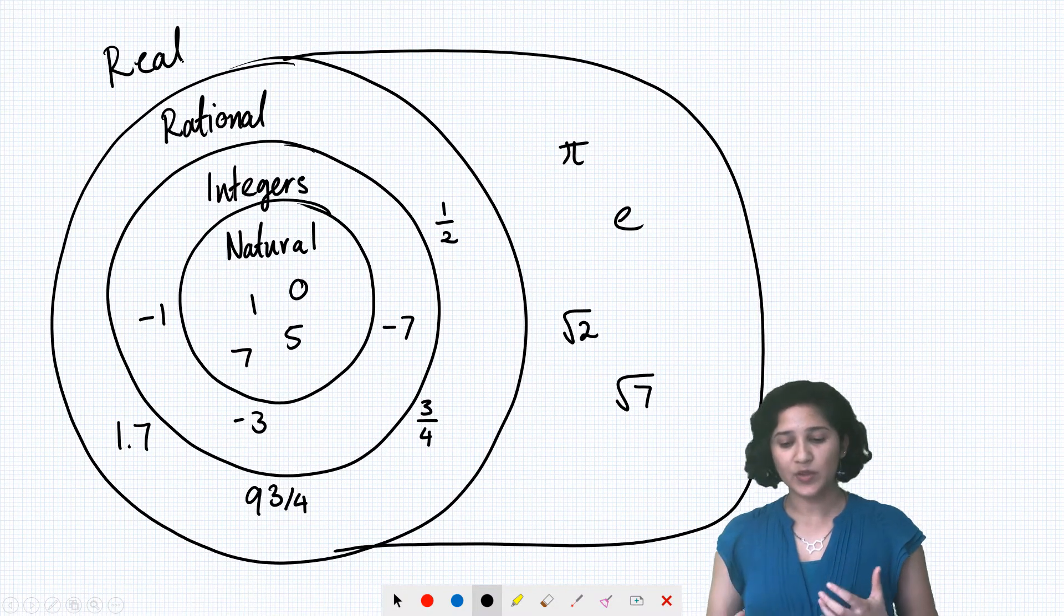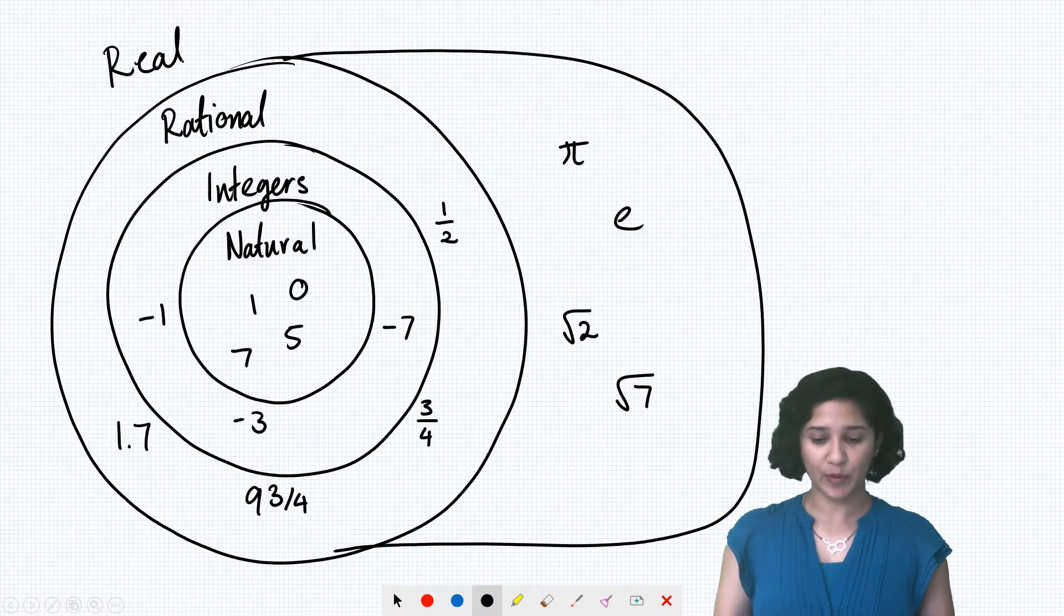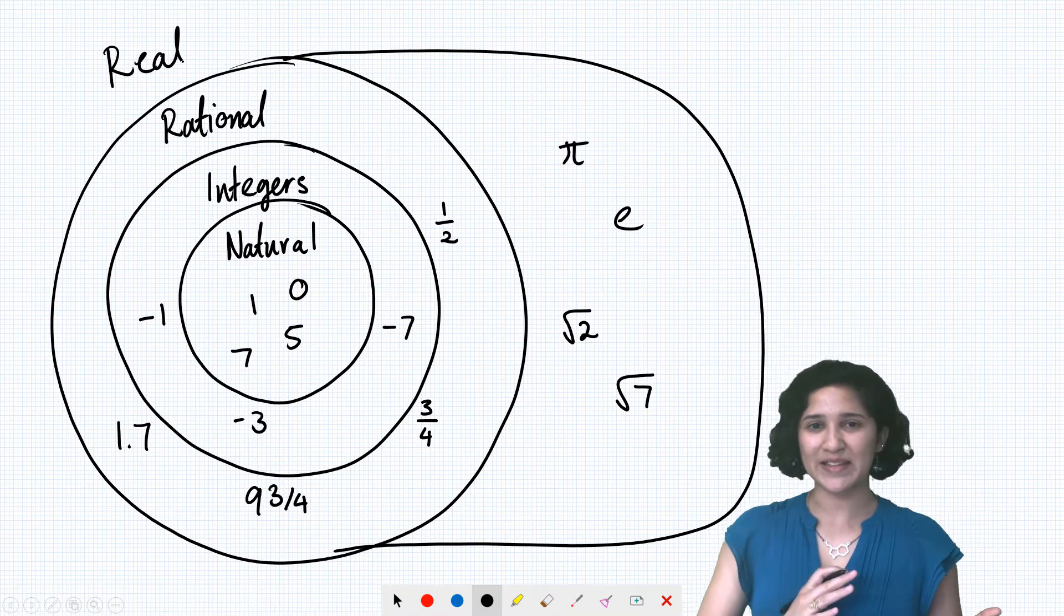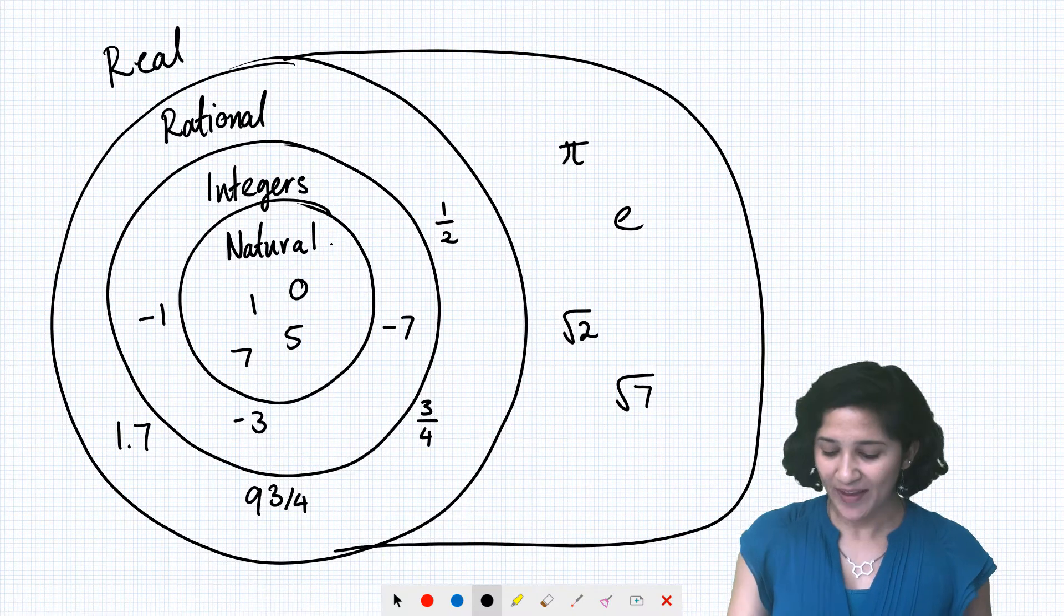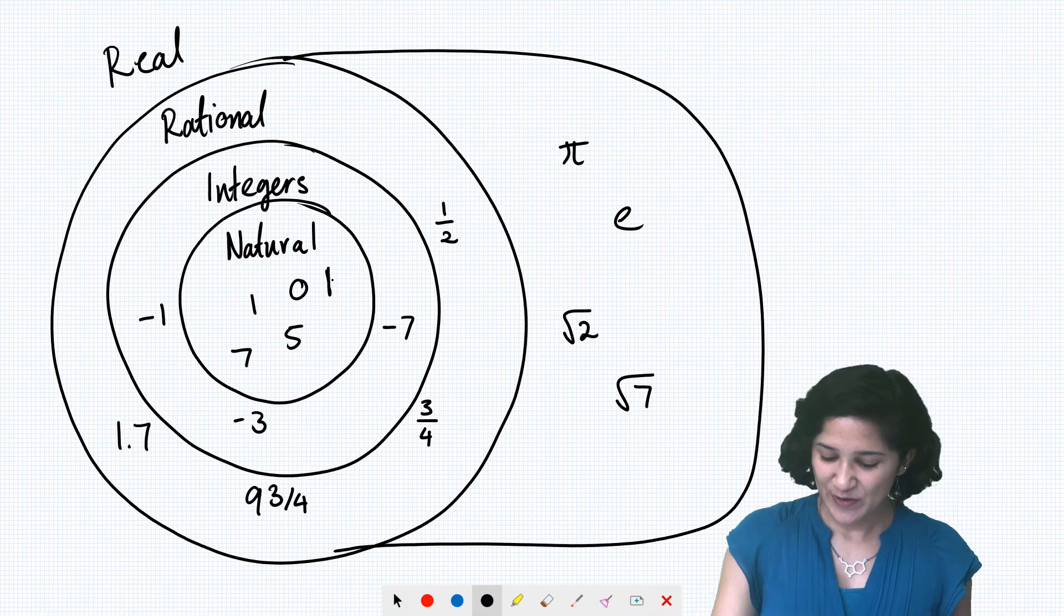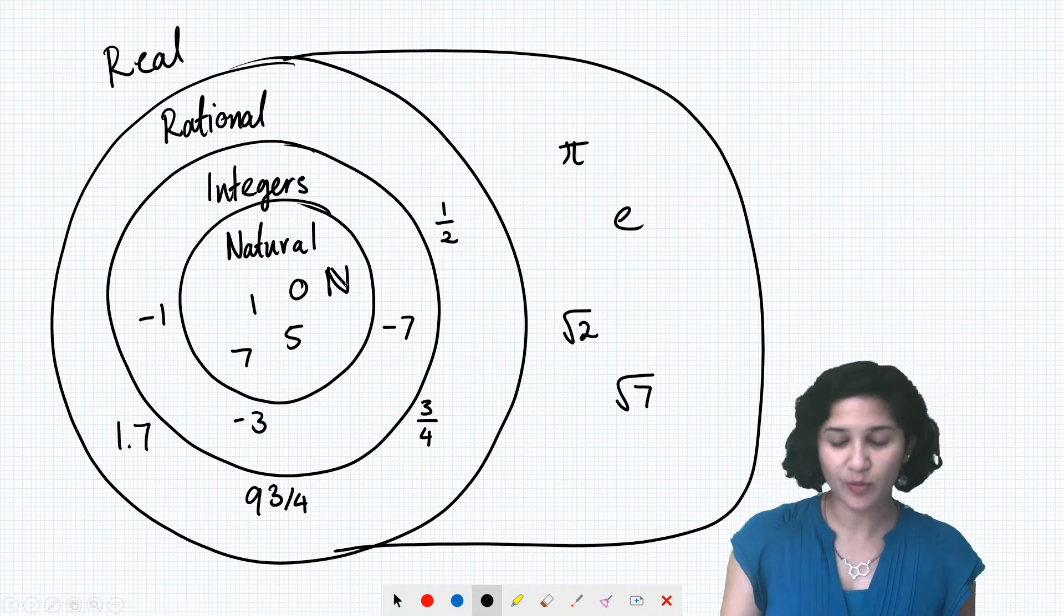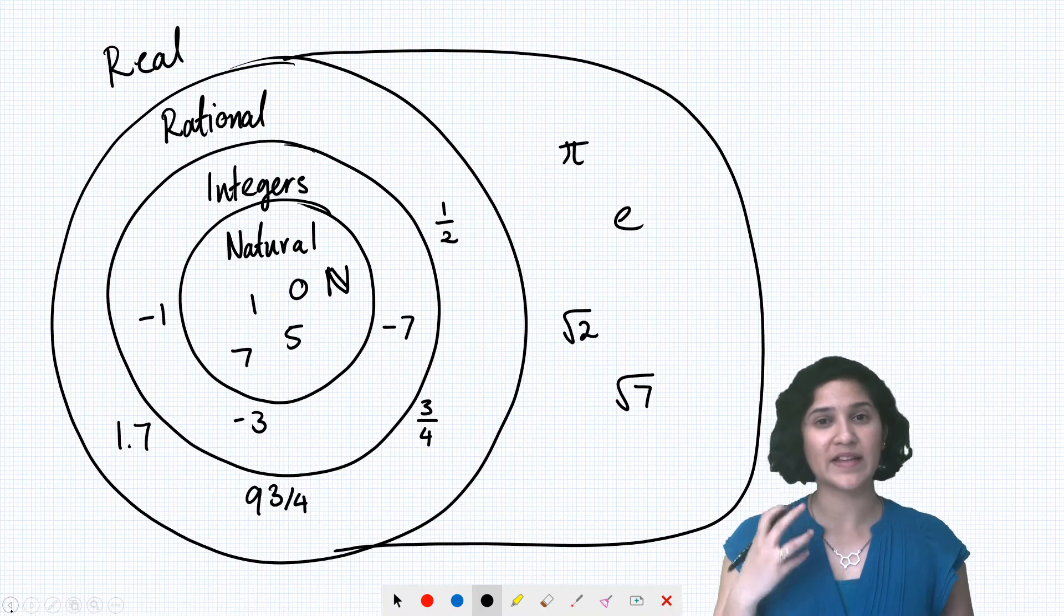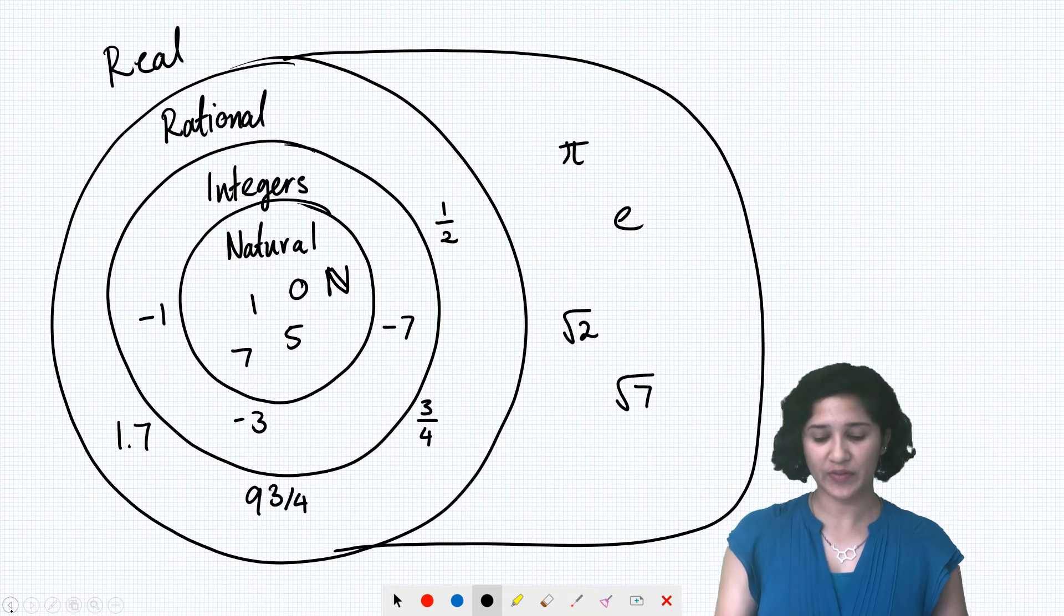So in maths, we give each of these sets a special symbol. And sometimes it makes sense what the symbol is, and sometimes it's a little bit random. So for natural, it's nice and simple. We have the letter N, and we write it with two lines to show that it's talking about that set of natural numbers.